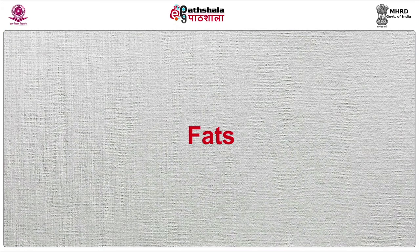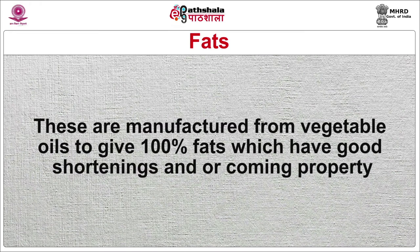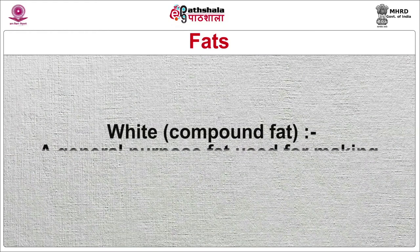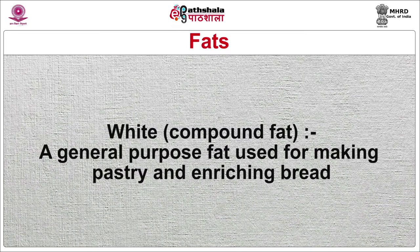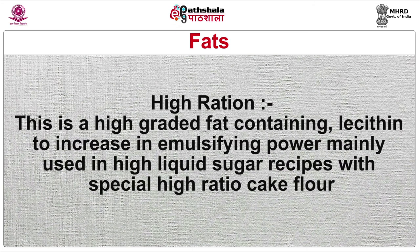Fats are essential components of most bakery products, and their quality and quantity may affect both the shortening response of the dough and the quality of the finished products. They are manufactured from vegetable oils to give 100% fats with good shortening and creaming properties. There are three broad groups: white, also known as compound fats — a general-purpose fat used for making pastry and enriching bread; yellow fat, much softer in consistency, a high-grade fat most suited to blend with margarine or butter in making cakes; and high-ratio fat, containing lecithin to increase emulsifying power, mainly used in high-liquid sugar recipes with special high-ratio cake flour.